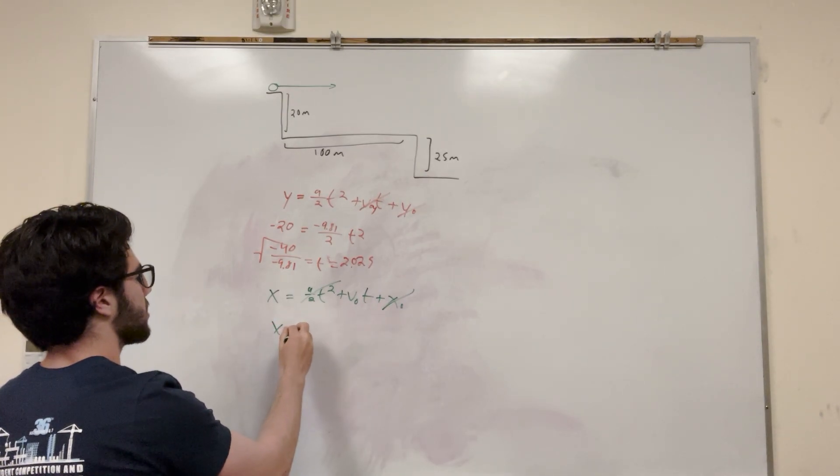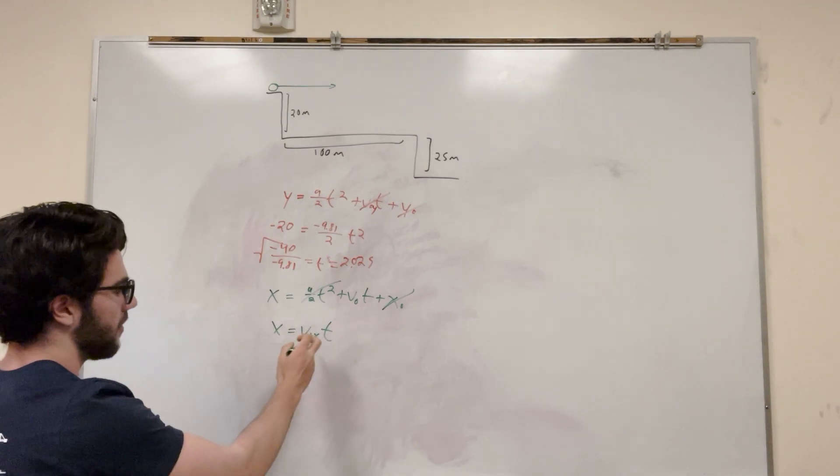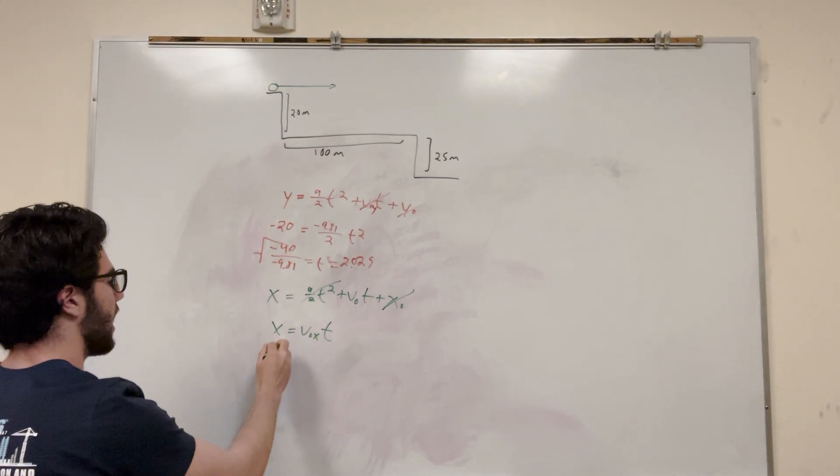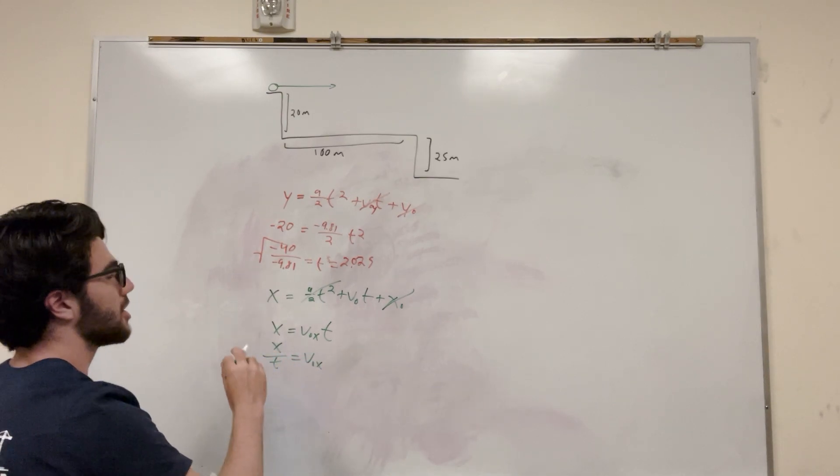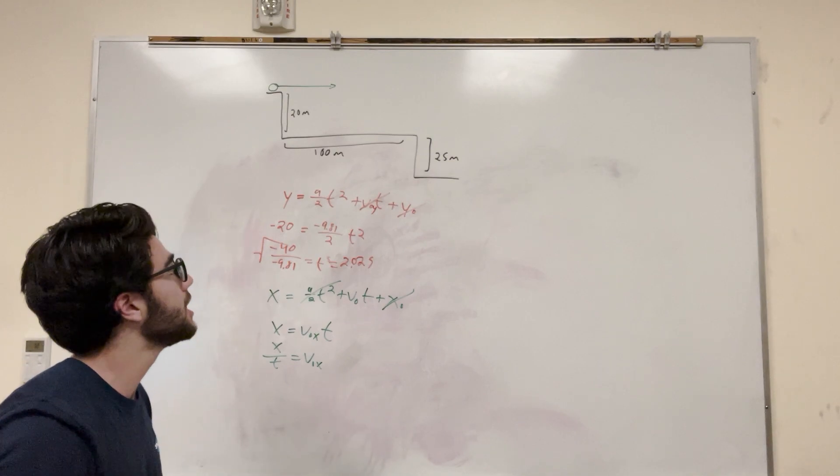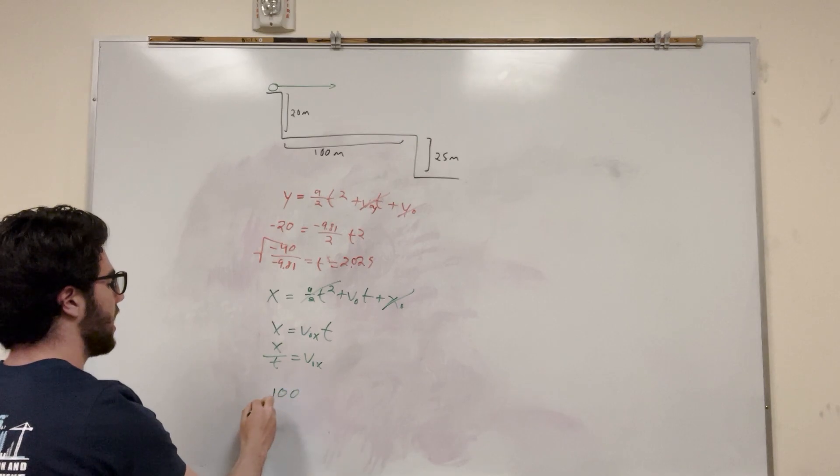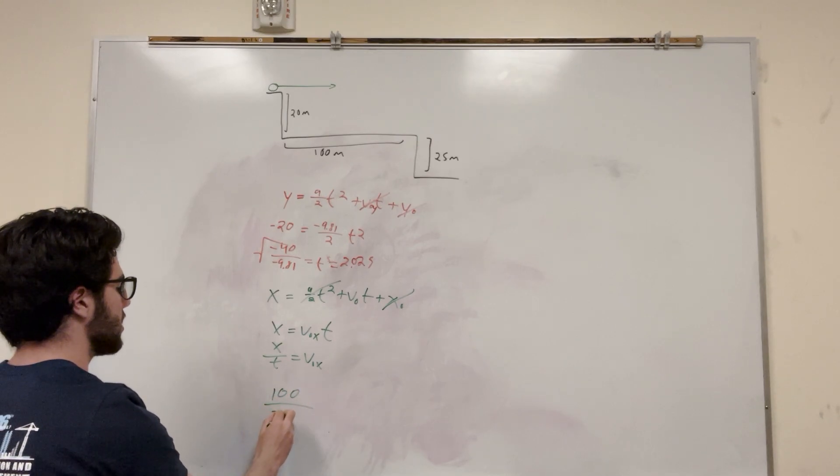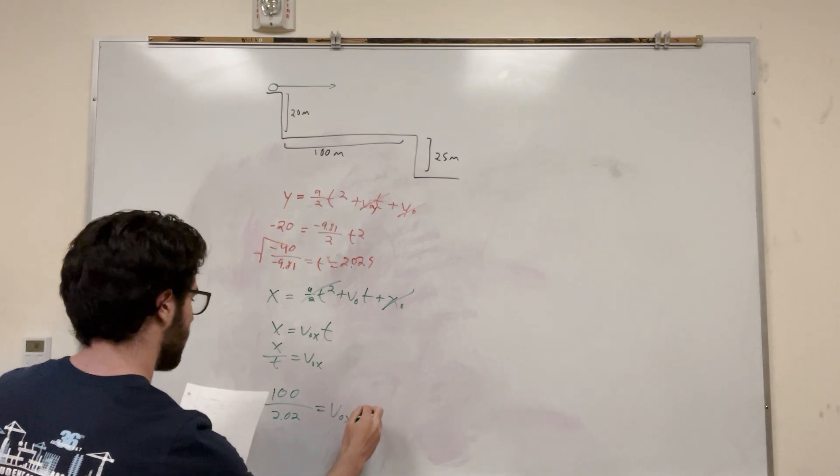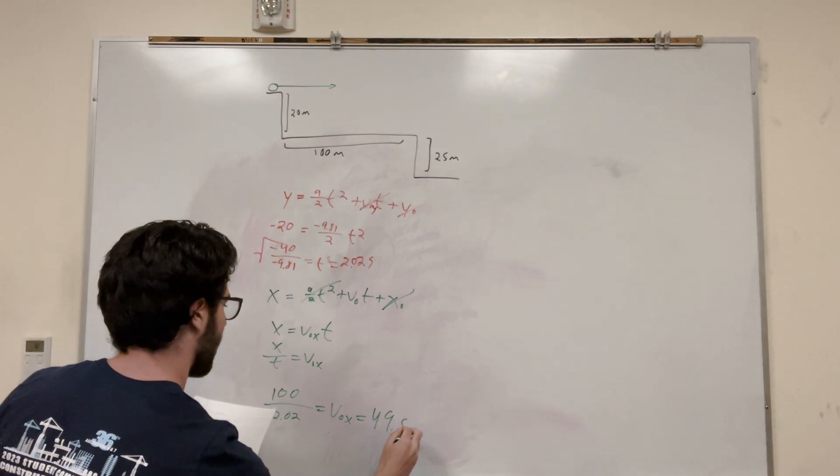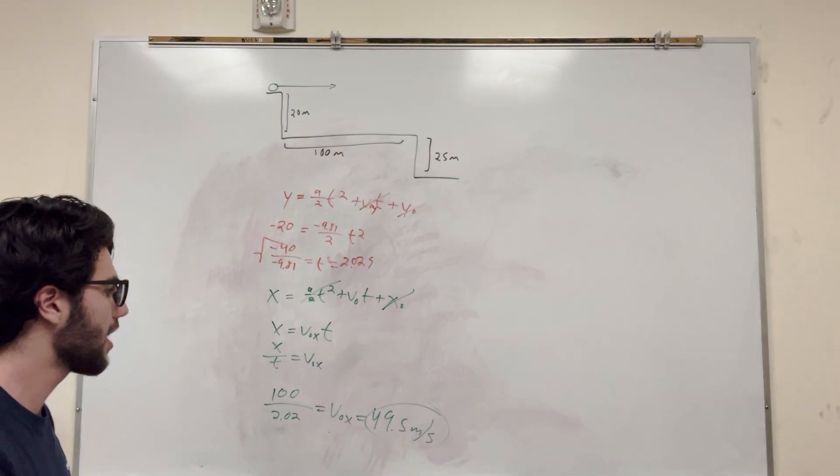So we're going to end up as x is equal to v naught, in the x direction times time. So we're trying to find v naught, so let's go ahead and divide by time. So x divided by t is equal to v naught in the x direction, which is actually just going to be the initial velocity in general. So we have these values. We're trying to see how long it takes to go 100 meters, and we know that our time is 2.02 seconds. So that's going to be our v naught x, which is going to be equal to 49.5 meters a second. So that's the initial velocity that you need. That's part A.